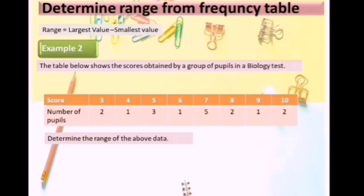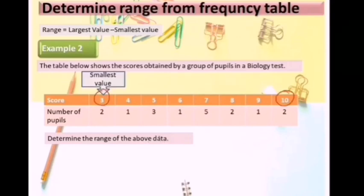Example 2. The data below shows the scores obtained by a group of pupils in a biology test. Determine the range of the above data. Here is the smallest value and here is the largest value, so the formula for range is largest value minus smallest value.